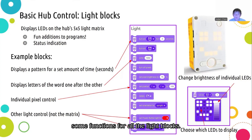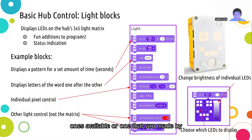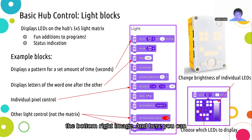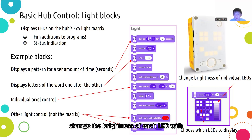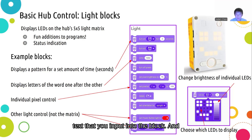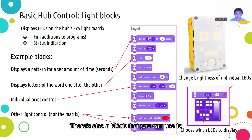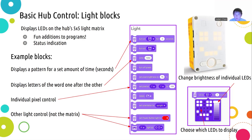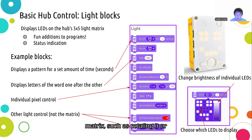Here are some functions for all the light blocks. The first two will display a design — you can either select from the ones available or create one yourself using the pixel editor shown in the bottom right image, where you can select individual pixels to turn on or off and change the brightness of each LED with the bar on the right. There is also an option to display text that you input into the block, which will scroll across the matrix in a sideways waterfall style, one letter after the other. Additionally, there is a block to directly change the brightness of a specific LED based on an x, y coordinate, and other blocks that change the appearance of the matrix such as rotating it or setting the orientation.